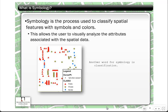So what is symbology? Another word for symbology is classification. It's basically the process used to classify spatial features with different symbols and different colors. This allows the user or the viewer of your map to better understand what you're trying to get across. You want to make your map pleasing and easy to identify what's going on so you can get your point across. It's really the whole purpose of doing the map.